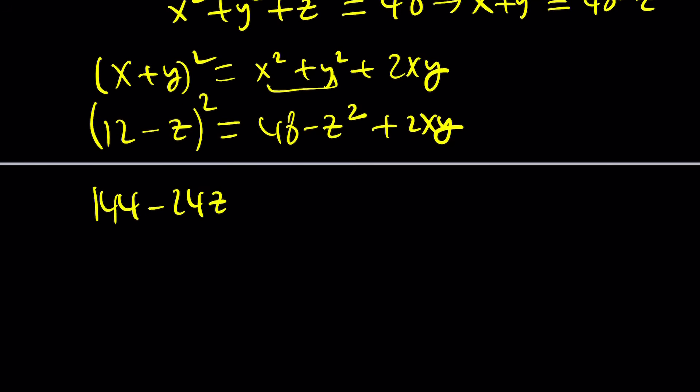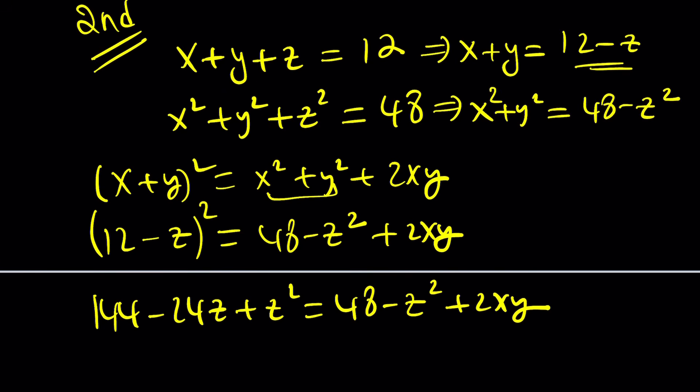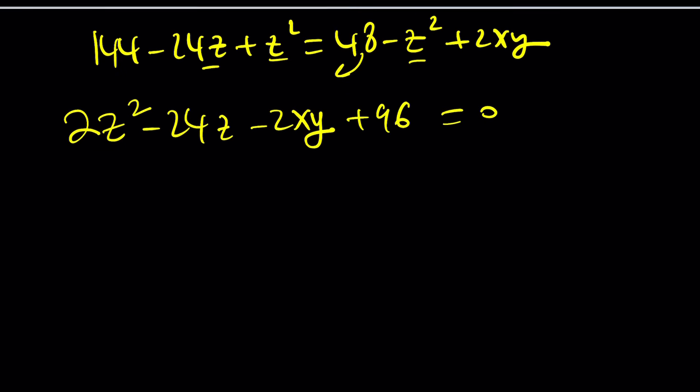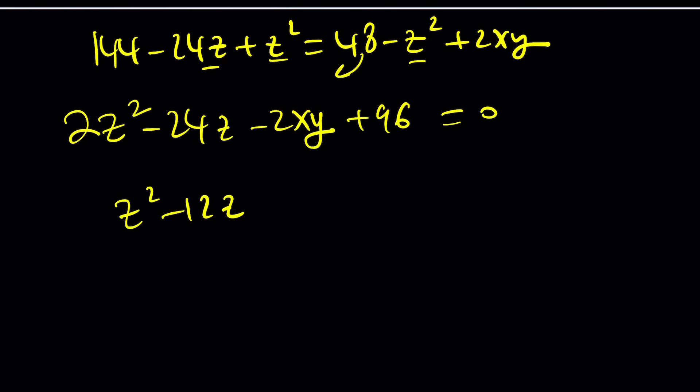144 minus 24z plus z squared is equal to 48 minus z squared plus 2xy. Maybe we can find xy in terms of z here. And then from there, hopefully we can come up with something more meaningful. Now let's go ahead and, oh, another thing that I haven't tried, maybe I'll do this first and then I'll show you the other one. But if you put everything on the left-hand side, we're going to get z squared minus, by the way, there's going to be two of them, 2z squared minus 24z. These two were taken care of. And I'm going to bring over the 2xy. And if you bring this over, that's going to give us plus 96 equals 0. Maybe this is something that I got before. I don't know, but I'm still going to give it a try.